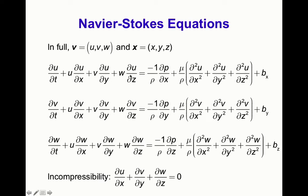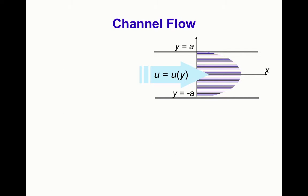We often need to use the incompressibility condition to constrain the flow field. Let's use the Navier-Stokes equations to derive the solution for channel flow — the flow of a fluid under a pressure difference between two parallel plates. The plates are aligned in the x-direction, so the flow velocity u should vary only as a function of y, with boundaries at y equals plus and minus a.